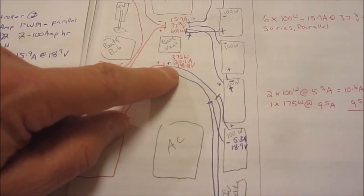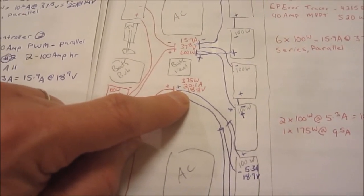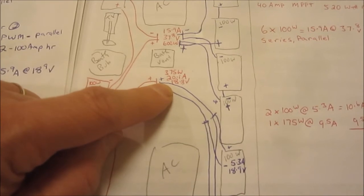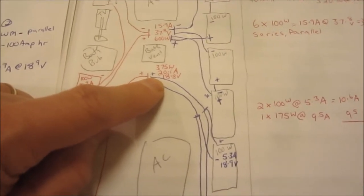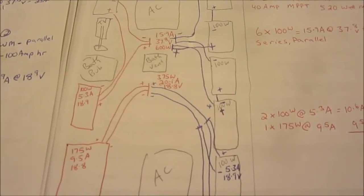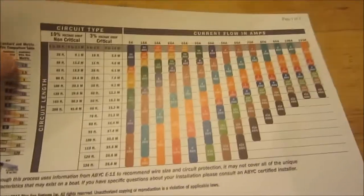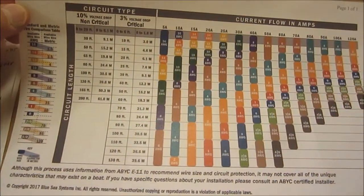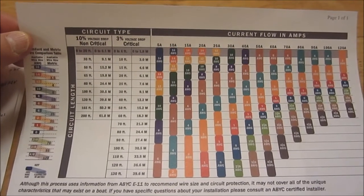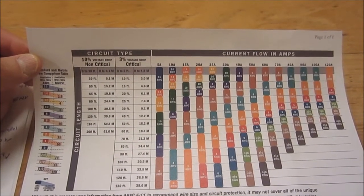So my concern is, is my number 10 gauge wire going to be safe and even efficient at all to transfer that power to my charge controller from the roof? So I looked at various wiring charts to see what exactly that was going to do and how it's going to work out for me.